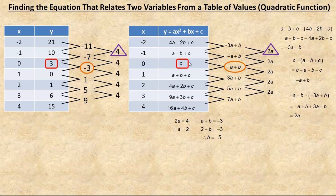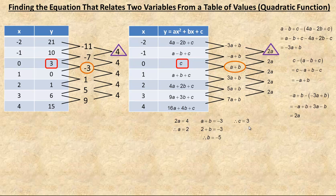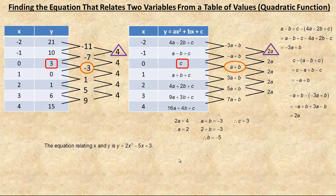The only thing left to find is c. c is the y value when x is 0, so basically it's the y-intercept. The simplest place to find c is that the generic c equals the y value when x is 0, which is 3 over here. So c equals 3. Filling 2, negative 5, and 3 in place of a, b, and c, the equation that relates x and y is y equals 2x squared minus 5x plus 3. And that's how you find the equation that relates x and y from a table for a quadratic function. That's the end of the tutorial.